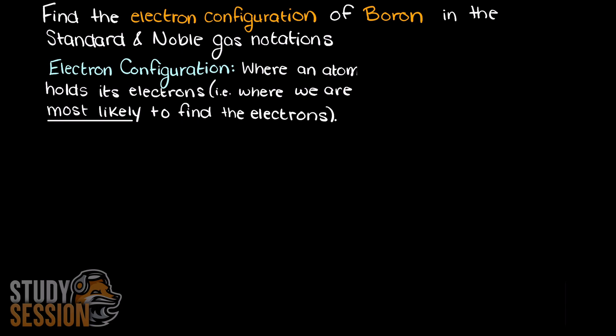So, to solve this, the first thing we need to do is look at our periodic table and see how many electrons our boron atom actually has in its ground or unexcited state.